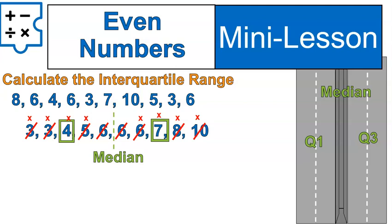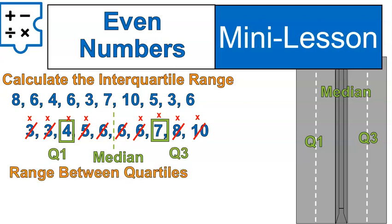Okay. That's important when you have a list of an even number of numbers. Then you find your quartiles. You do your interquartile range, which is 7 minus 4, and that gives you 3.